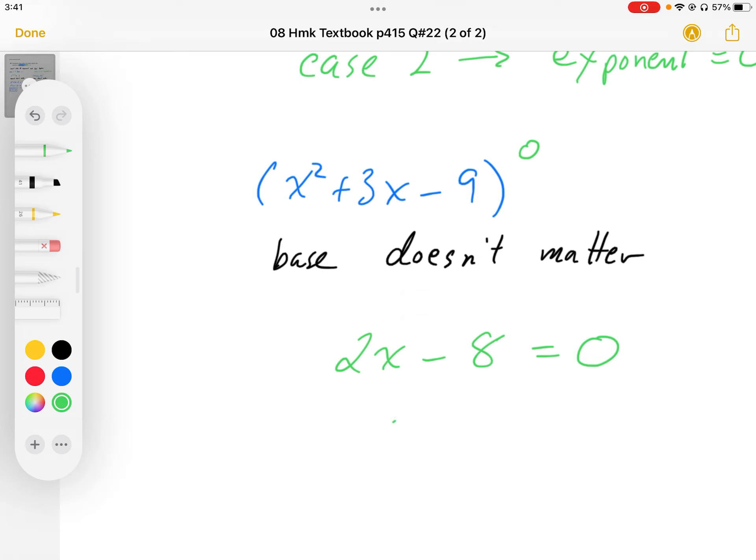2x - 8 = 0, so 2x = 8, giving us x = 4. So there's another solution.